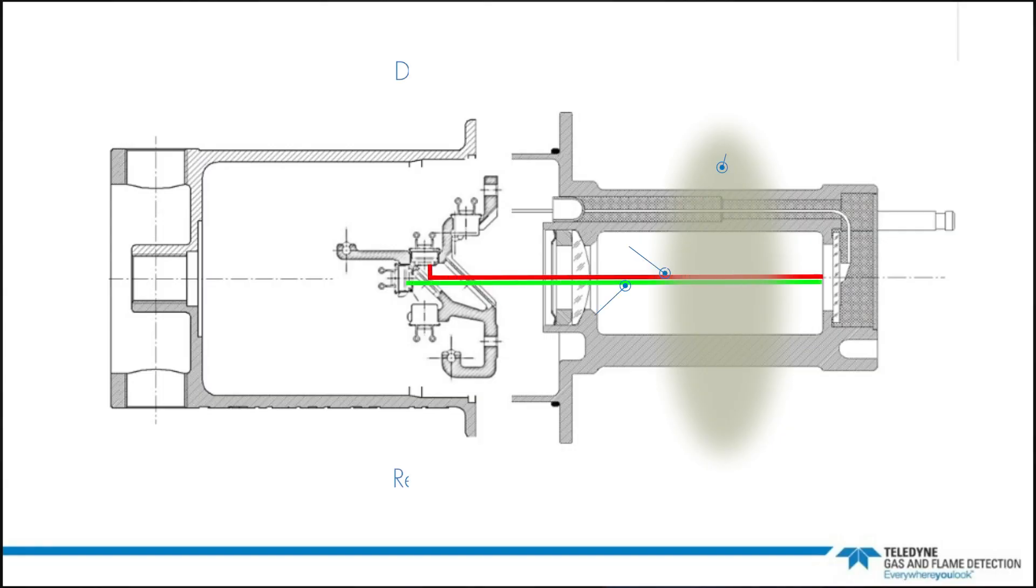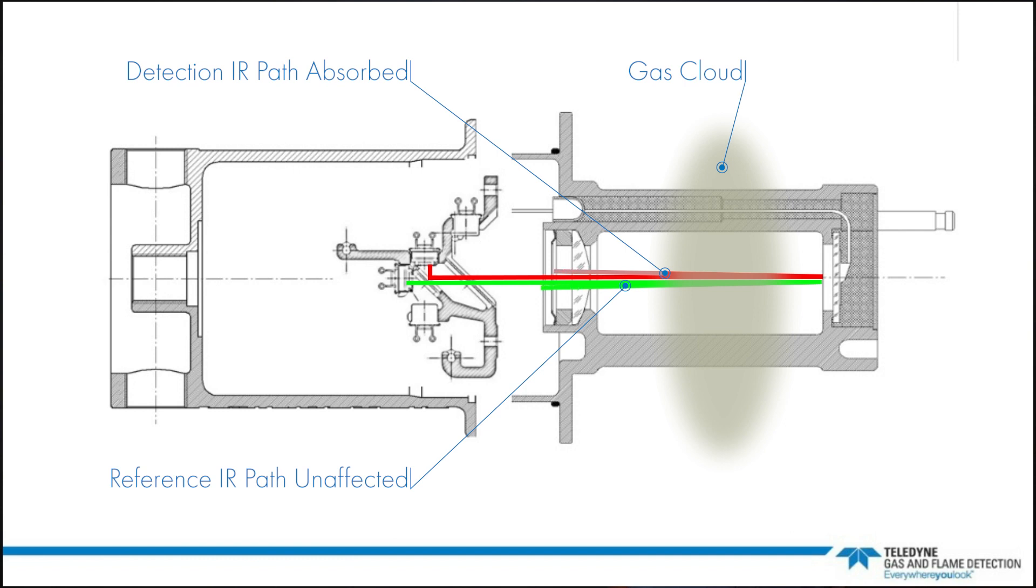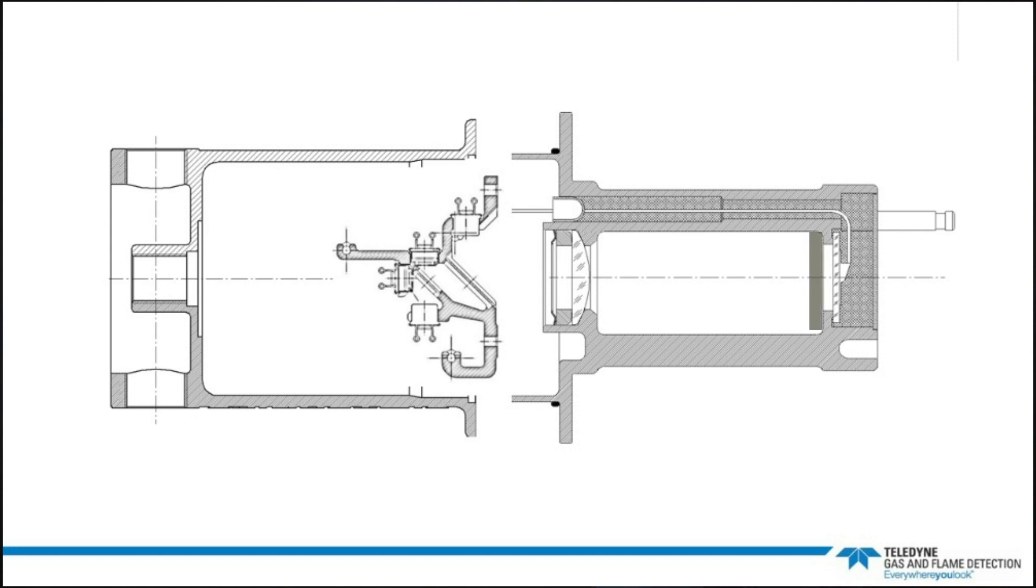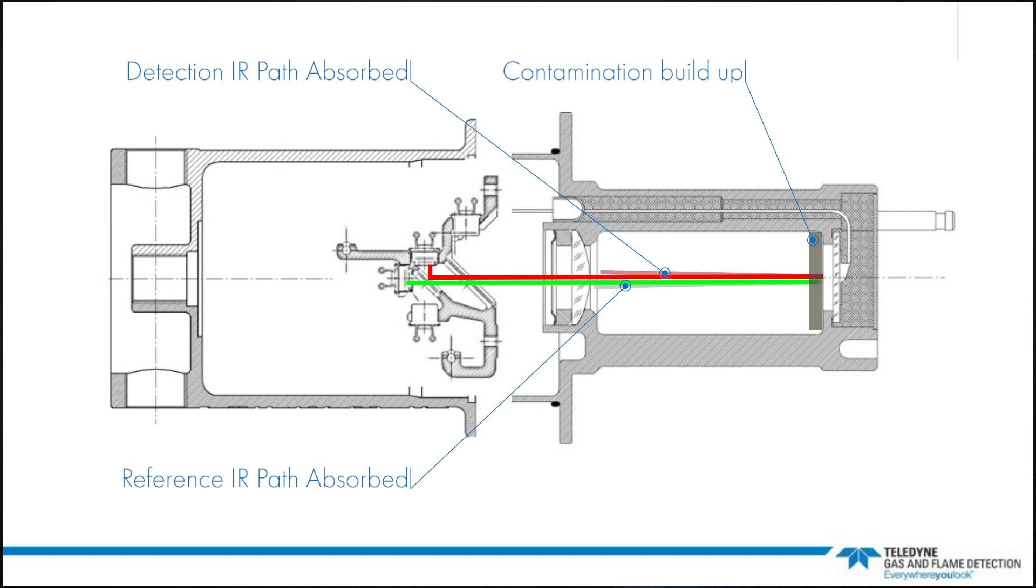Here you can see the gas present absorbing the detection path in the device and outputting as a gas event. Whereas here you see a contamination building up on the lens absorbing infrared in both the gas detection path and the reference path, telling the device there's a build up of contamination.